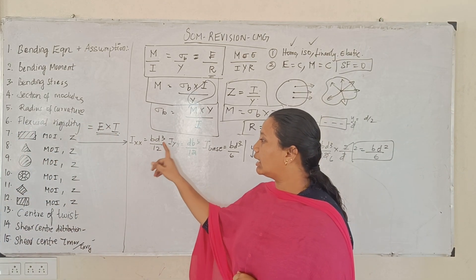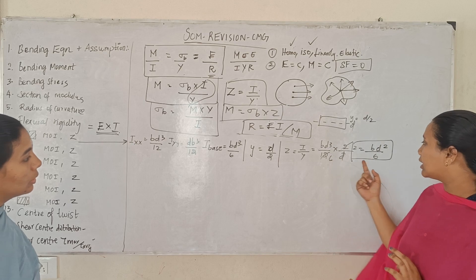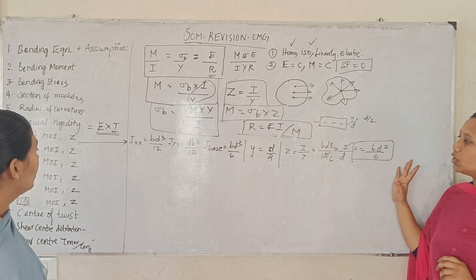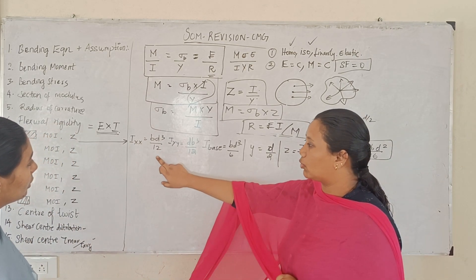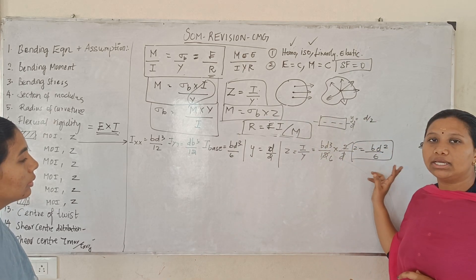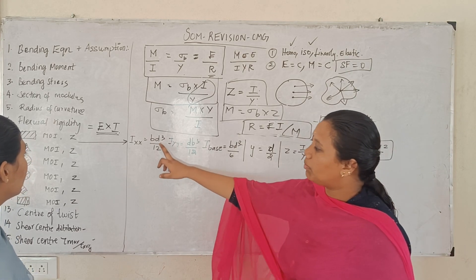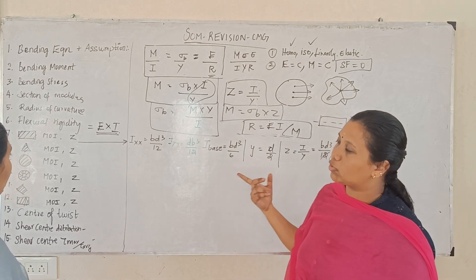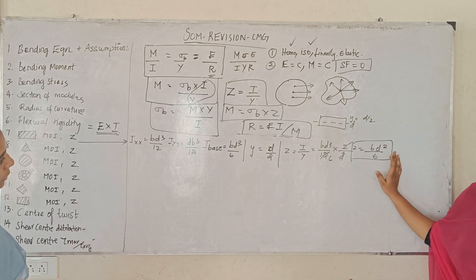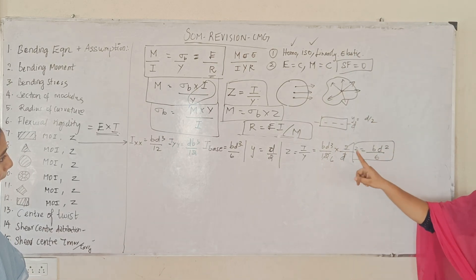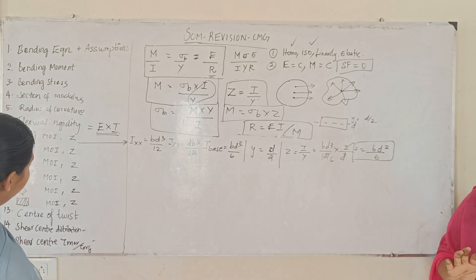The moment of inertia for a rectangle is b·d³ by 12, and the section modulus is b·d² by 6. Since d/2 into 12 gives 6, so d³ divided by d/2 equals d² divided by 6.